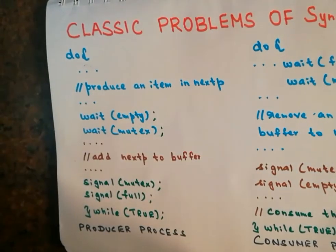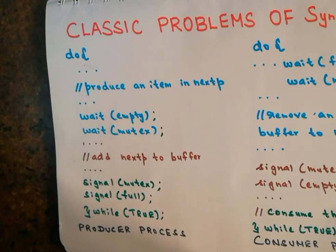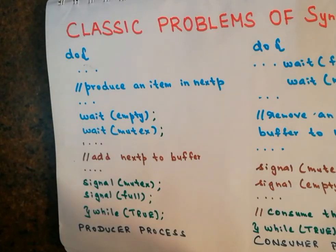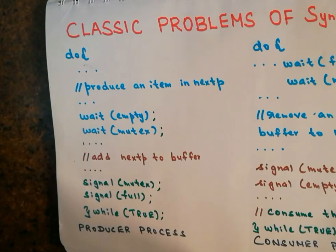This is the code for the producer and the consumer process, and this is how the producer-consumer problem is solved using the concept of semaphores. This is how we solve the producer-consumer problem, also called the bounded buffer problem, using semaphores. That's all for this video — see you in the next one. Take care, bye bye.